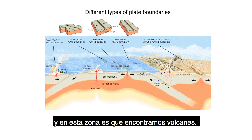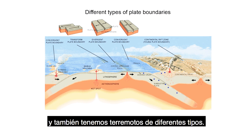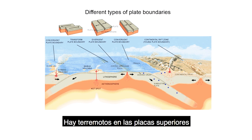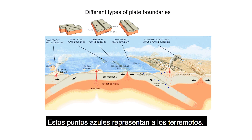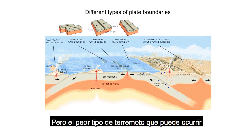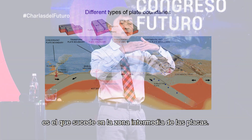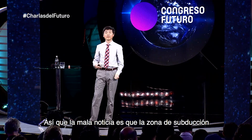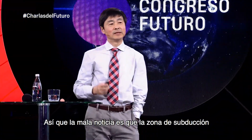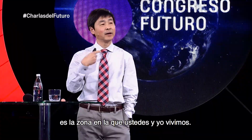At a subduction zone, we see volcanoes and earthquakes. There are different types of earthquakes: earthquakes in the upper plate, earthquakes in the downgoing plate—the flashing blue spots represent these earthquakes. But the worst type are earthquakes that occur on the interface of the plates. And the bad news is, subduction zones are where you and I live.